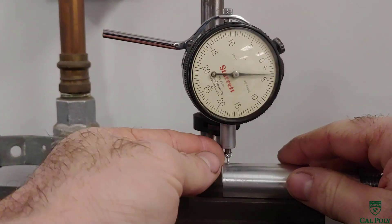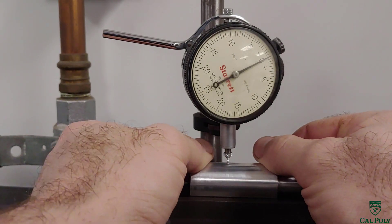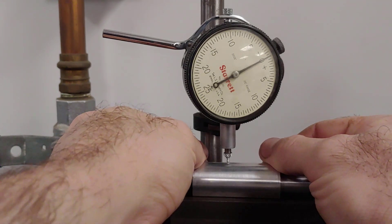We place our lathe part on a v-block under the dial indicator and zero the dial. We rotate the lathe part carefully while placing downward pressure to be sure that the part stays in full contact with the v-block.